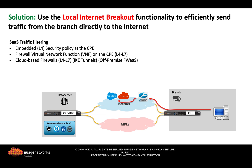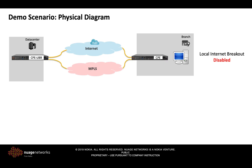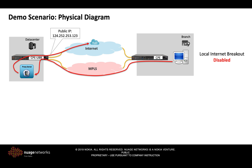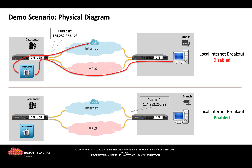In the demo, I will demonstrate how the breakout functionality works. We have the data center on the left and a branch on the right, connected using internet and MPLS. Currently, the platform is configured so that the PC in the branch accessing a SaaS application on the internet will be backhauled to the data center, filtered by the proxy there — which could also be a firewall — and if the request is authorized, forwarded to the SaaS application. We will then activate the local internet breakout functionality at the branch, enabling requests to exit directly at the branch. In this demo we don't have filtering at the branch, but one can choose any of the methods discussed previously.